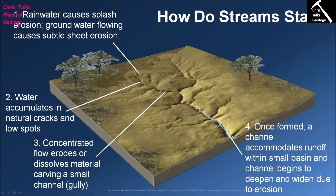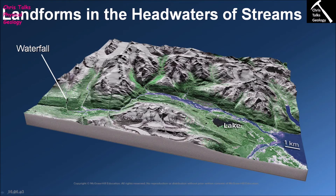Over time, several of these streams join together and supply enough water to form a single large channel, which continues to flow downhill under gravity. It's a relatively straightforward process: small cracks combine their water to make small streams, small streams become larger streams, and these larger streams combine together to end up forming a single large river.